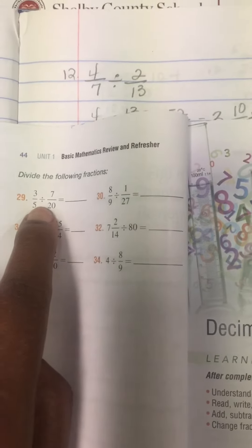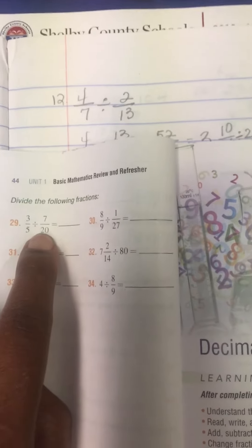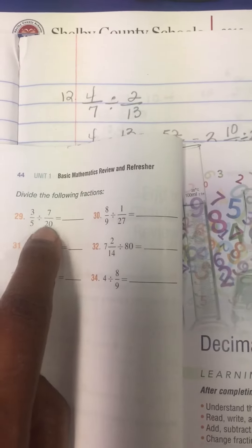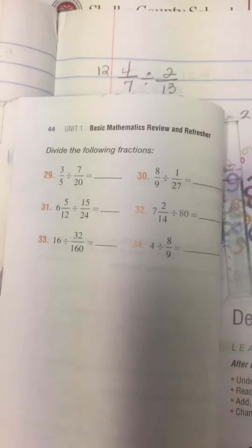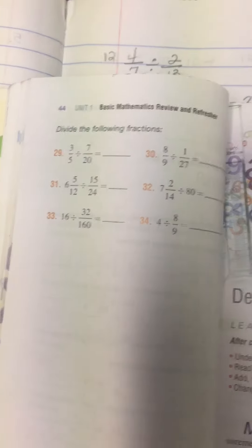Keep three over five, change the division to multiplication, and do the reciprocal or flip the second fraction, which is 20 over seven. You may either cross-cancel or multiply straight across, or please simplify your answers.